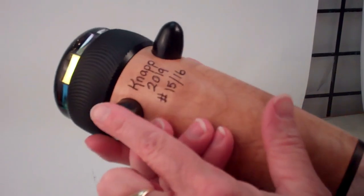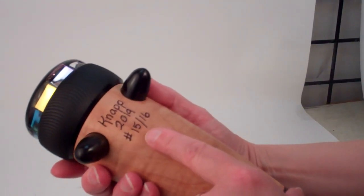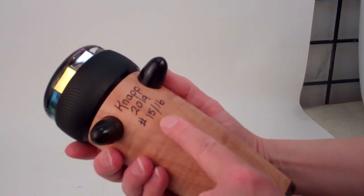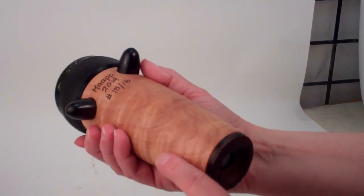The feet are also solid wood and they've signed it with a wood burning tool directly into the western maple. Knapp 2019, number 15 of 16.